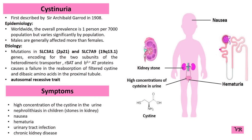Hello friends. I am going to discuss about Cystinuria. Cystinuria is a genetic disorder characterized by the abnormal excretion of cysteine and other amino acids in the urine,